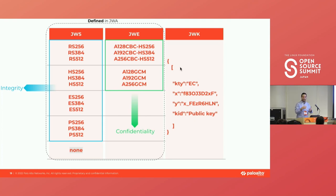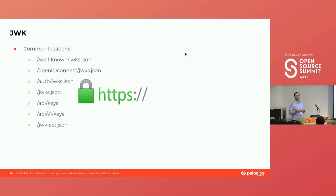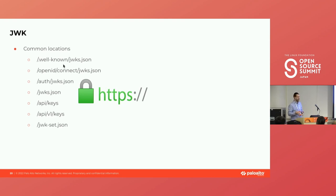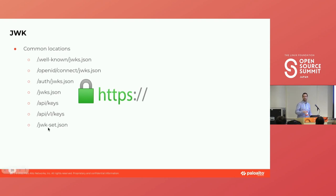A little more about JWK — where is this located? It's a JSON file stored in many cases under common locations such as /.well-known/jwks.json, under openid/auth, on the root as jwks.json, or at paths like /api/keys with version numbers, or something custom like jwk-set.json. This is important because we need to know where the token is leading us, and as an attacker we want this JWK information.